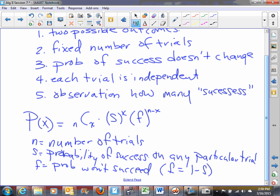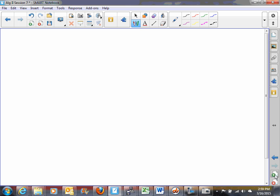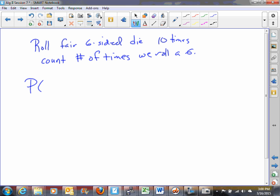Now let's take a look at an example experiment. Let's say we're going to roll a six-sided die, a fair six-sided die, ten times. And we'll count the number of times we roll a six. And so then the question is, what is the probability that we'll roll a six twice?